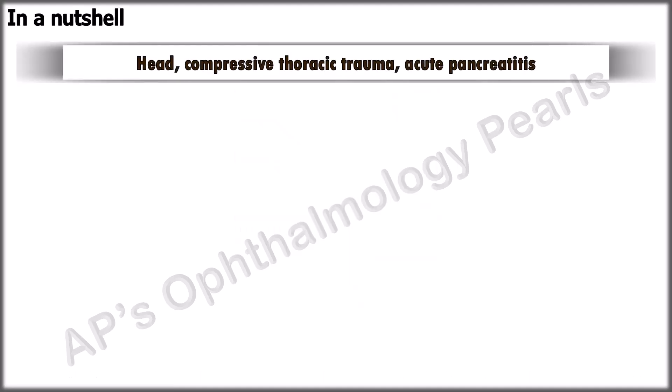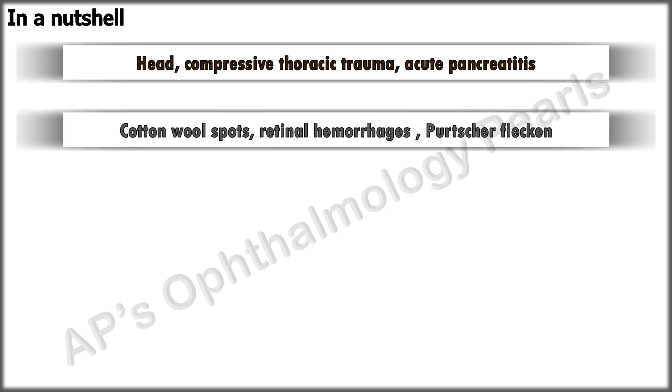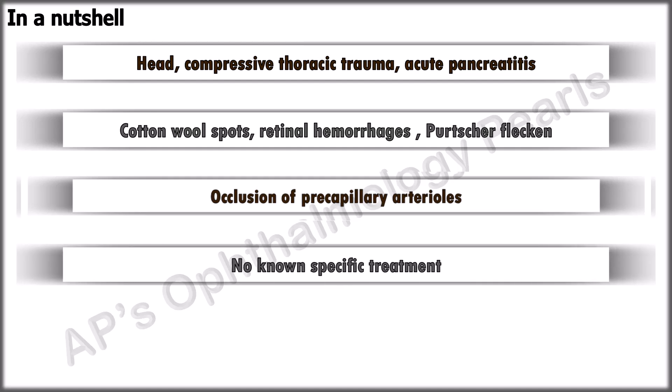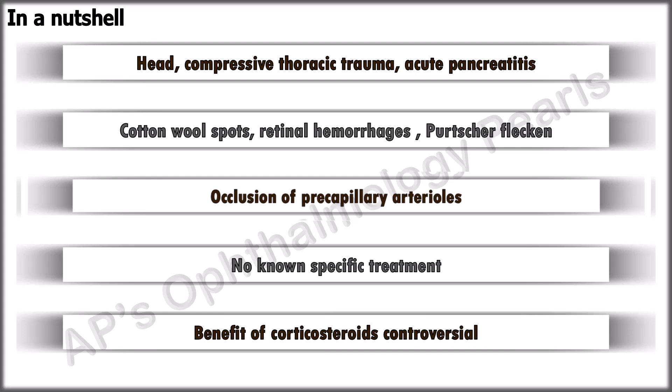To summarize, Purtscher retinopathy occurs in head and compressive chest trauma, and Purtscher-like retinopathy in non-traumatic conditions. Cotton wool spots, retinal hemorrhages, and Purtscher fleckens are the most common features, with Purtscher fleckens being pathognomonic. Purtscher retinopathy occurs due to occlusion of precapillary arterioles. There is no specific treatment except for the underlying condition, and opinion is divided over the benefit of corticosteroids.